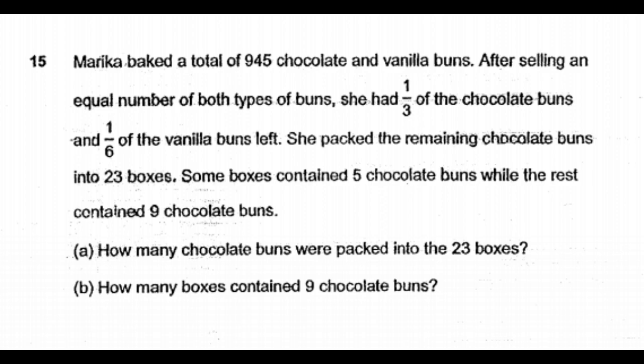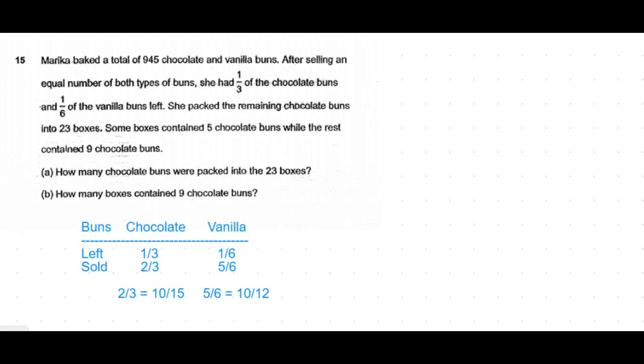Let's now look at the question. The first statement says that she had one-third of the chocolate buns and one-sixth of the vanilla buns left. So first thing we need to find out is how much was sold. One-third of the chocolate buns is left means two-thirds of the chocolate buns were sold, and one-sixth of the vanilla buns were left means five-sixths of the vanilla buns were sold.